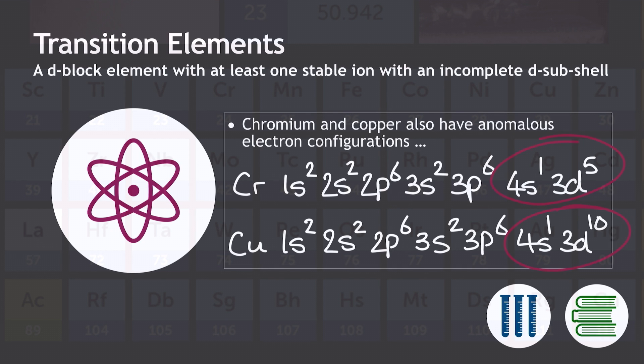There are also two anomalies with the D-block transition element electron configurations, and these are for chromium and copper. You may expect chromium would actually end in 4S2 3D4, and that copper would actually end in 4S2 3D9, but they are 4S1 3D5 and 4S1 3D10 respectively.